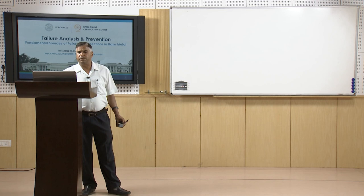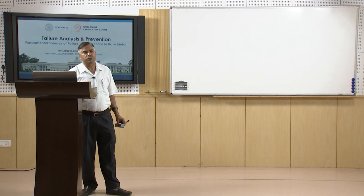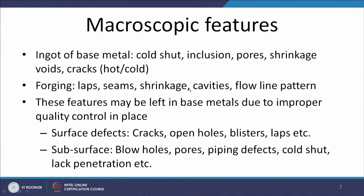Similarly, in forged components produced by deformation-based processes like forging or rolling, defects may include laps, seams, shrinkage cavities, and unfavourable flow line patterns, which may provide easy sources for nucleation of voids and cracks under external loading. If these features are left in the base metal due to improper quality control, they lead to surface defects like cracks, open holes, blisters, and slaps, or subsurface defects like blow holes, pores, piping defects, cold shots, and lack of penetration.